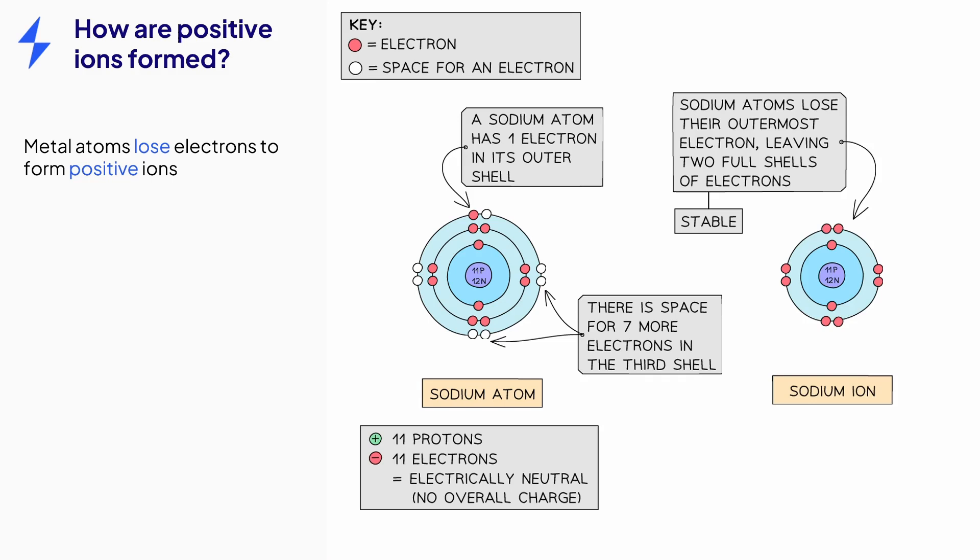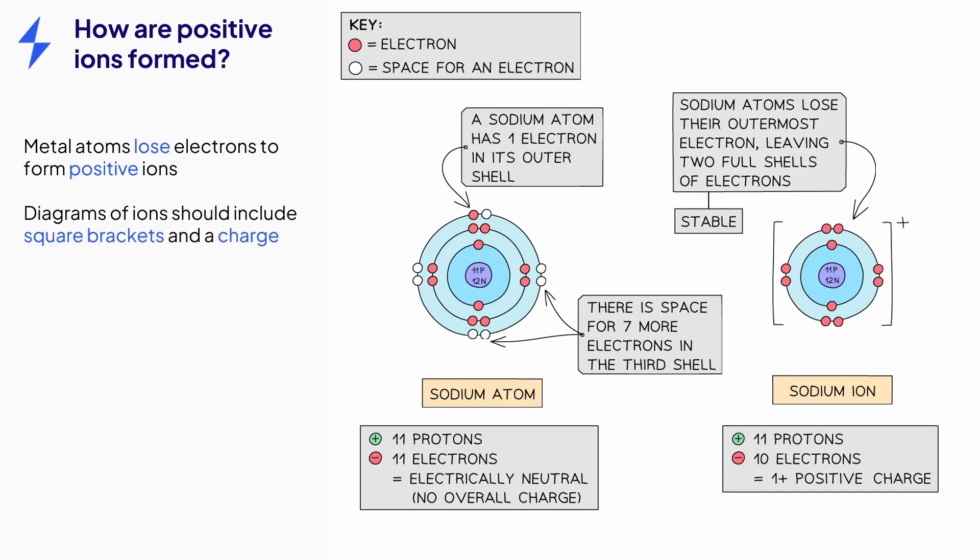As you can see, the sodium ion has no third shell, but a full second shell. It still has 11 protons, but now it only has 10 electrons. So it has one more proton than electrons, and therefore it will have a charge of one plus. We show the charge by putting square brackets around the ion. This indicates that the charge is spread evenly across the ion, and the charge is just outside the bracket in the top right-hand corner.